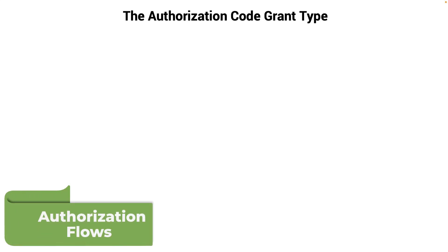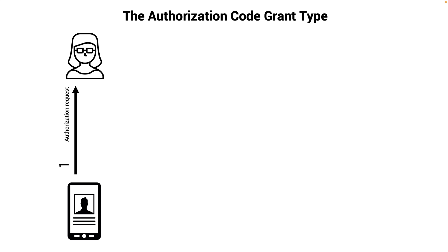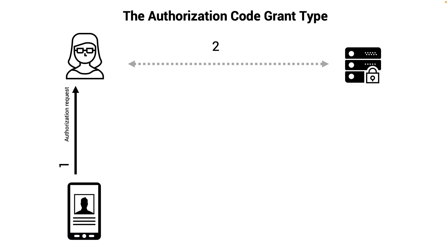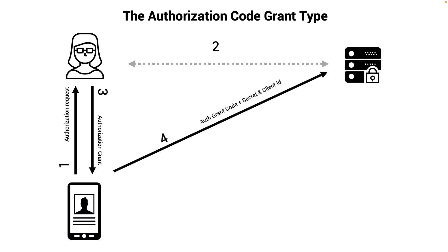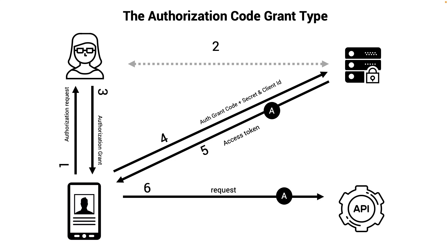Let's get back to each of these flows and talk about them in detail. Starting with the authorization code grant type — the user interacts with the application, taps or clicks, the request goes to the server. The user sees a consent screen, approves it, and the authorization grant comes back. The authorization grant together with the secret and client ID on the server will be checked and validated, and once validated the access token comes back to our Flutter application.